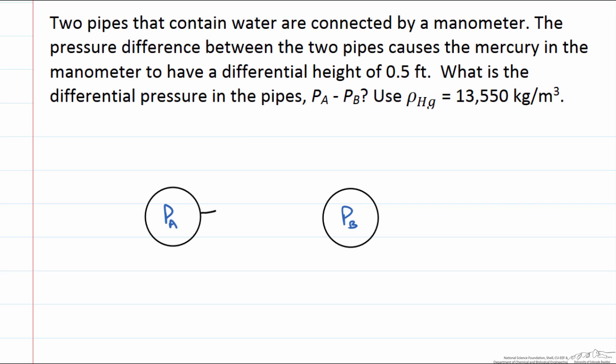Now for our manometer, do we draw it above, do we draw it below? Since we are using mercury as our fluid and it is more dense than water the only way this is going to work is if we draw our manometer so that our mercury fluid is below the water.